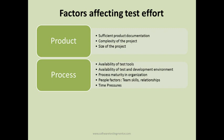People factors are another consideration. For example, if no automation skills are available in the team and you want to do automation, it will require more effort because the team needs training before they can start. If the team already has good automation skills, they can start immediately and save the time spent on training and ramping up. Other people factors include the relationships within the team.